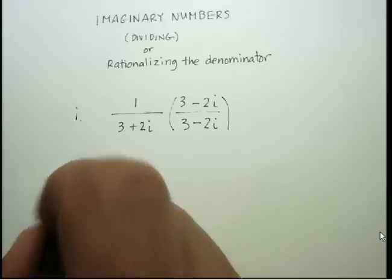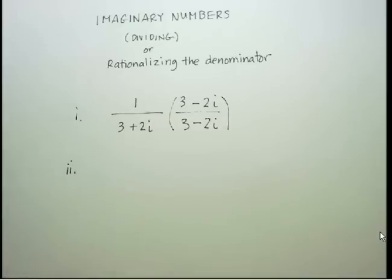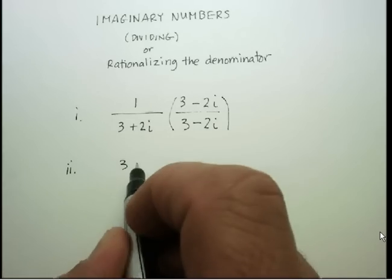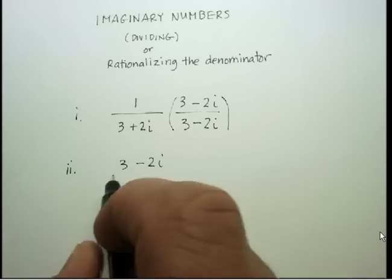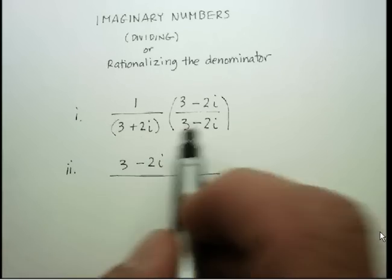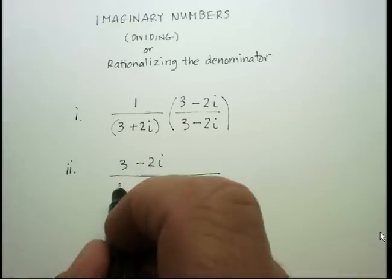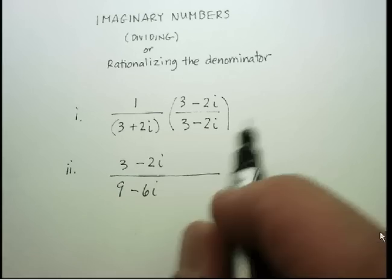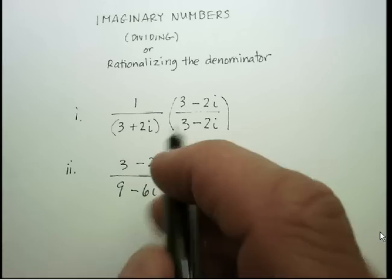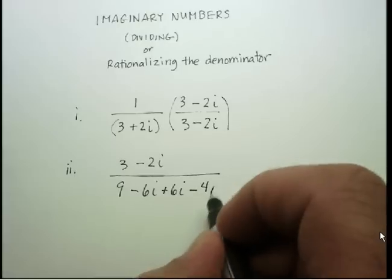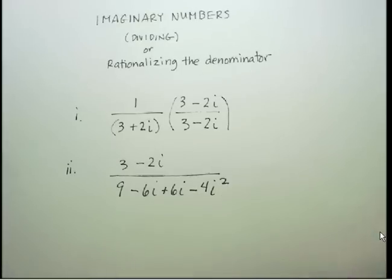By doing this, I'm going to have a FOIL in the denominator and just a regular distribution up top. In the numerator: 1 times 3 is 3, and 1 times negative 2i is negative 2i. In the denominator, I've got a binomial times a binomial: 3 times 3 is 9, 3 times negative 2i gives minus 6i, the middle terms give plus 6i, and the last terms give minus 4i².